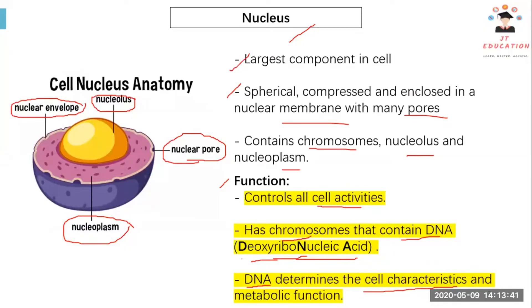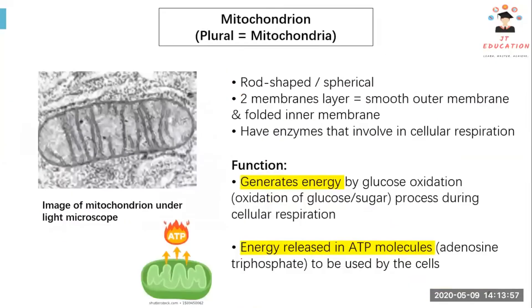It depends on what kind of cell it is — it can be a nerve cell, an epithelial cell, a sperm cell, or any type of cell. Next we have the mitochondria. The plural is mitochondria and the singular is mitochondrion.